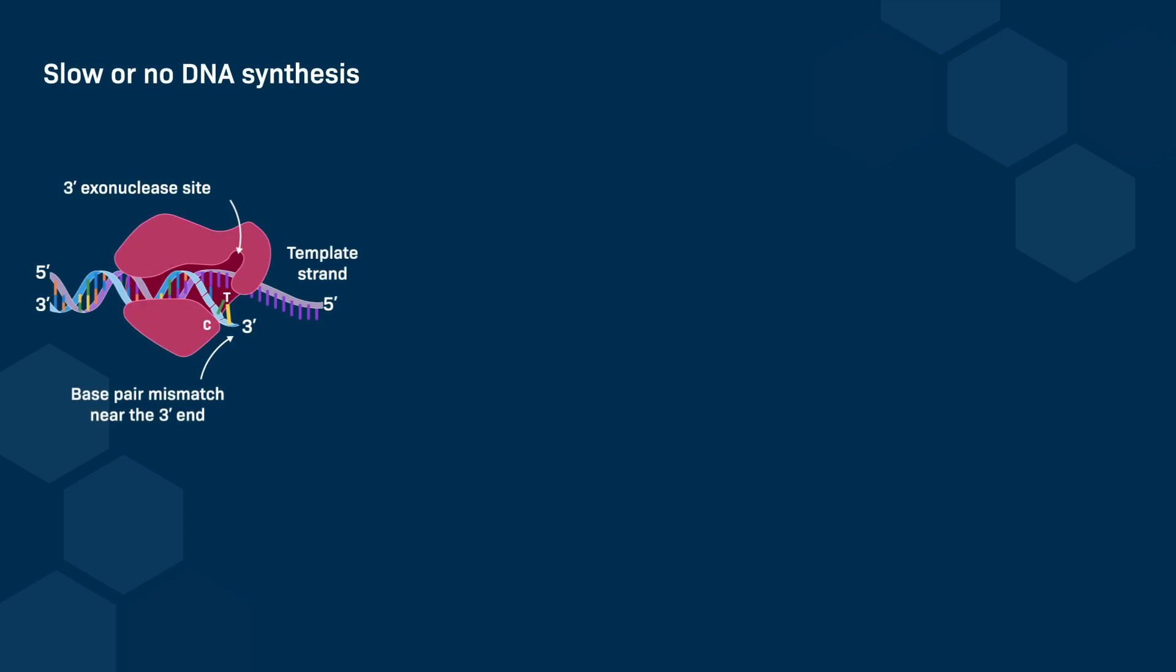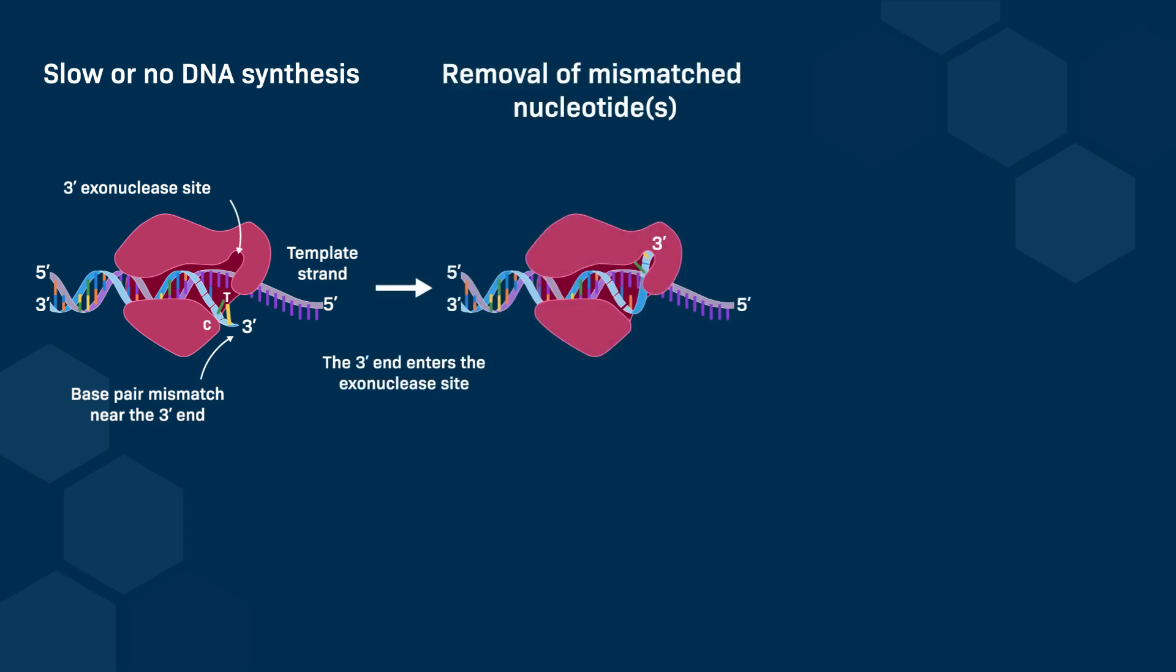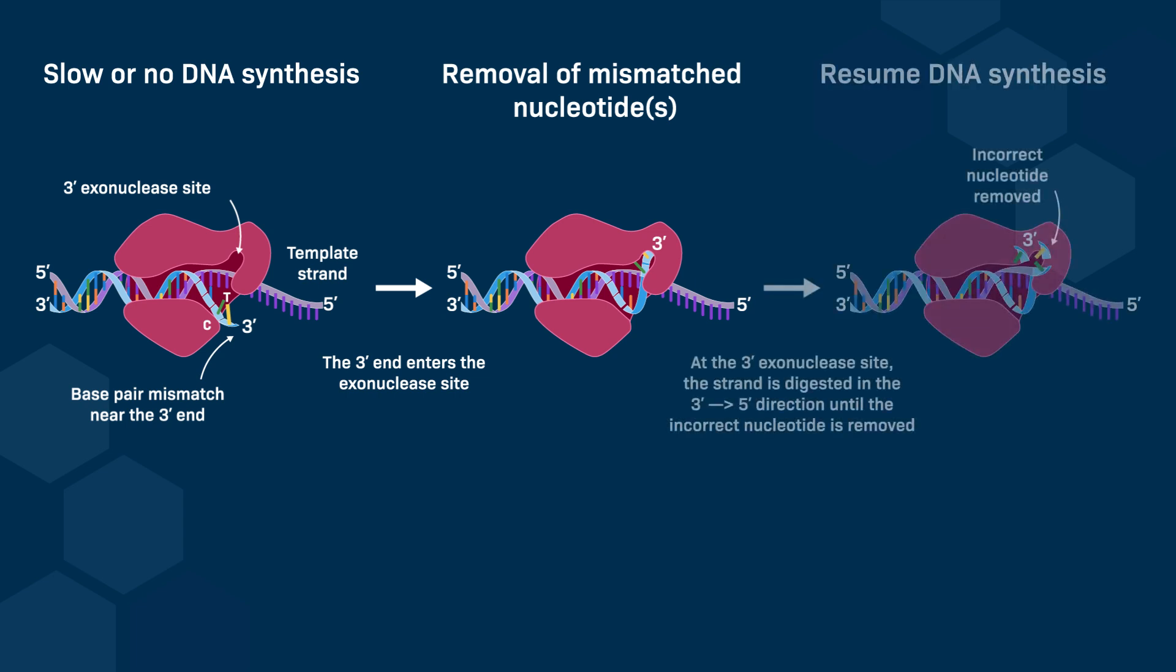The double helix distortion caused by a base pair mismatch triggers a conformational change of the DNA polymerase. This results in a shift in the position of the thumb domain and a movement of the elongating strand by approximately 41 angstroms, which causes it to exit the catalytic site and enter the exonuclease domain. In the exonuclease domain, the mismatched nucleotides are removed. After removal, another conformational change brings the elongating strand back into the catalytic site of the enzyme, which allows DNA synthesis to resume. This process ensures that errors in DNA replication are minimized, maintaining the integrity of the genetic information passed on during cell division.